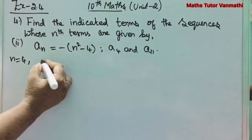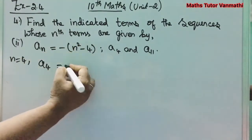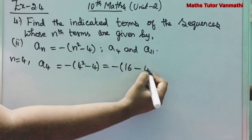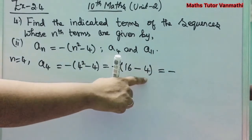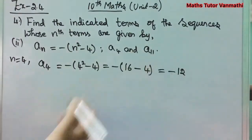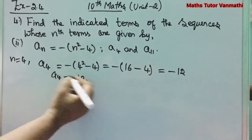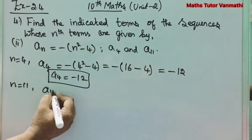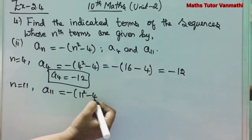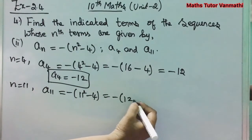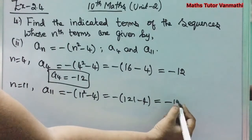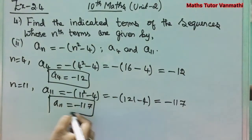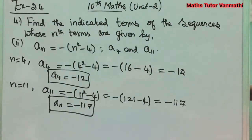For n = 4: a_4 = -(4² - 4) = -(16 - 4) = -12. For n = 11: a_11 = -(11² - 4) = -(121 - 4) = -117. These are the a_4 = -12 and a_11 = -117 answers.